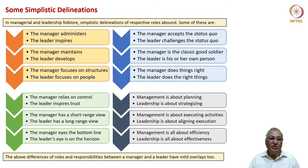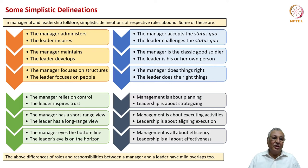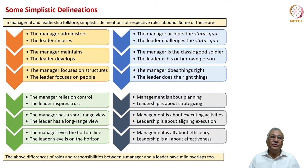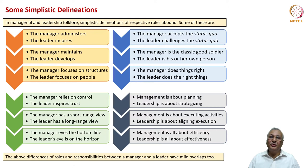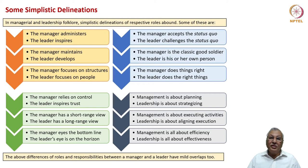The manager rightly has a short-range view — budget for the year, budget for the month, performance, course correction. Whereas the leader has a long-range view, interested in whether growth has been consistently upward and whether current aberrations are systemic, temporary or sustaining. The manager eyes the bottom line, whereas the true leader's eye is on the horizon and the triple bottom line. Management is about planning, whereas leadership is about strategizing. Management is about executing activities, whereas leadership is about aligning execution. Management is all about efficiency, whereas leadership is all about effectiveness.